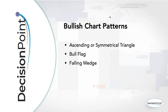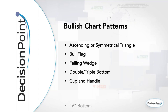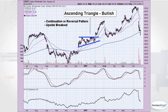I'm going to cover triangles, a bull flag, the falling wedge, double and triple bottoms, the cup and handle pattern, and a V bottom. You're seeing a lot of V bottoms — we saw a ton of them coming out of the bear market low. I've got lots of charts to talk about. If anybody is a StockCharts.com member, I can share this chart list — just send me an email at erin@decisionpoint.com and I can share all of these charts into your account.